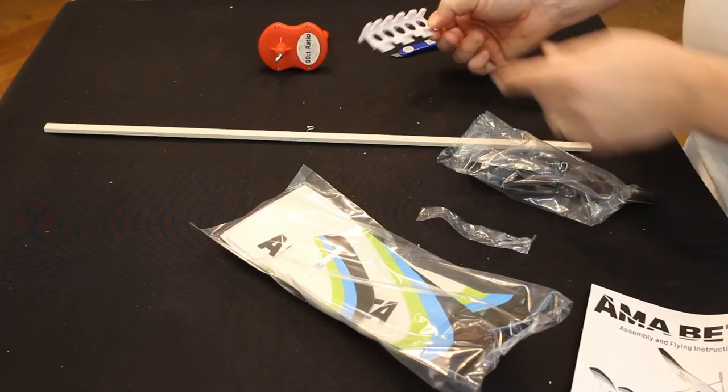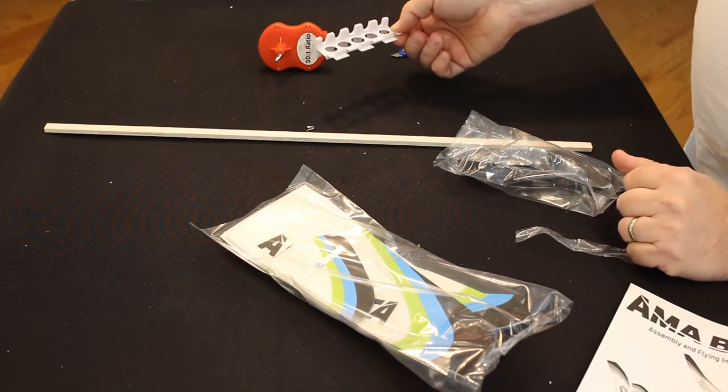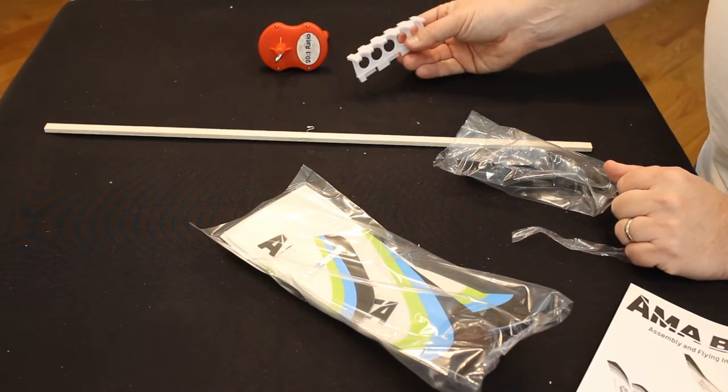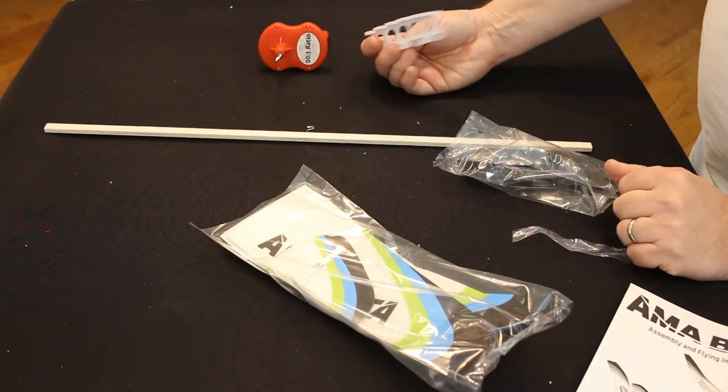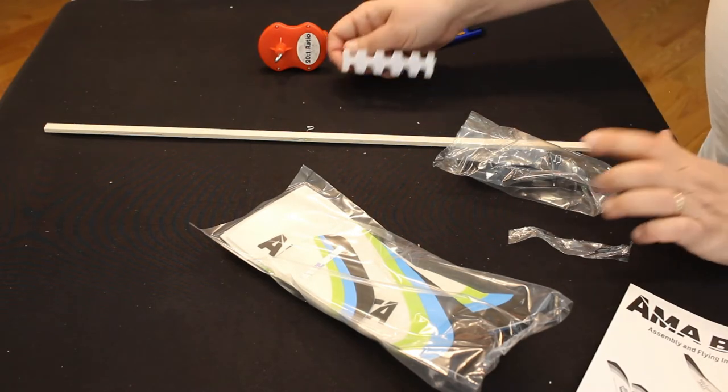You have a wing doohickey. This is actually a much different version than what was on the Alpha. What's interesting about this is that you can see it does curve rather than be flat like the Alpha was.